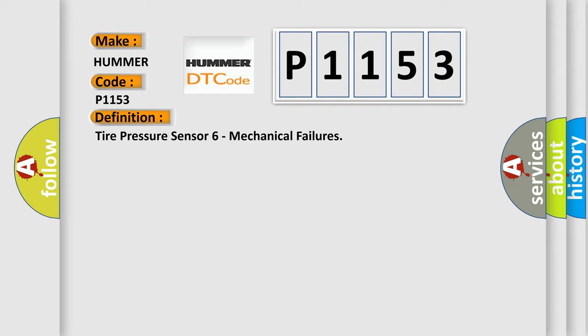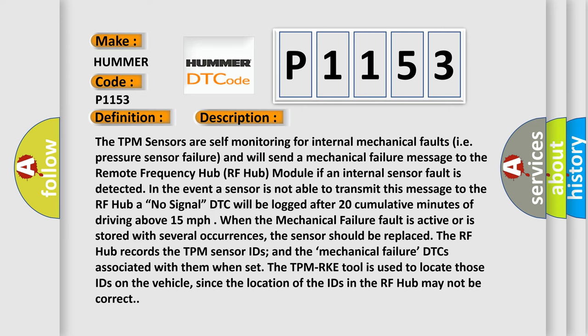Here is a short description of this DTC code. The TPM sensors are self-monitoring for internal mechanical faults, i.e., pressure sensor failure, and will send a mechanical failure message to the RF hub module. If an internal sensor fault is detected and the sensor is not able to transmit this message to the RF hub, the DTC will be logged after 20 cumulative minutes of driving above 15 miles per hour. When the mechanical failure fault is active or stored with several occurrences, the sensor should be replaced.